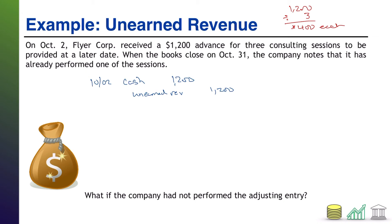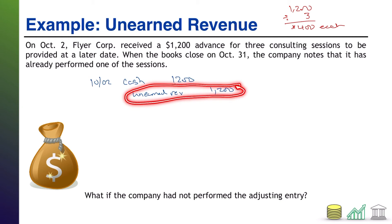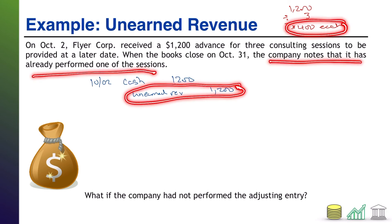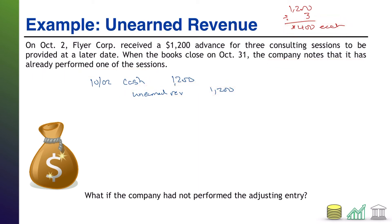When the books close on October 31st — and here's when adjusting entries get made — you prepare your trial balance and then ask: is there anything we have to fix? We have $1,200 of unearned revenue sitting on our trial balance, but we know that we've done one of the sessions. We've done $400 of that unearned revenue already. So on October 31st, we are going to record the adjusting entry.